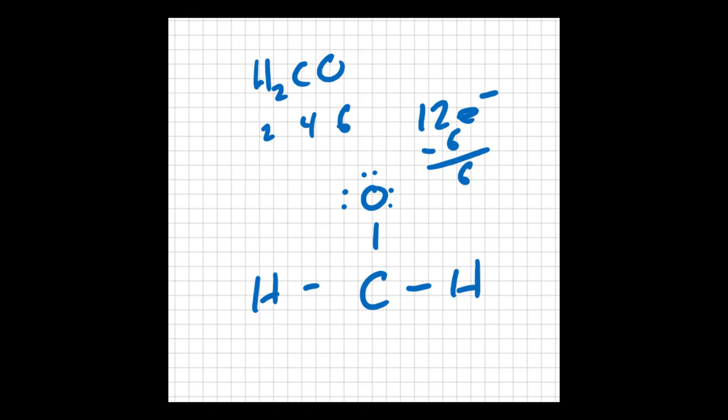But the problem is, if I do that, I've used up all my electrons, and carbon is not stable, so the only way to stabilize that is to take two electrons away from one of the oxygens and create a double bond. And that is your Lewis structure for formaldehyde, methanol.